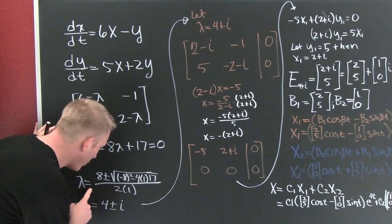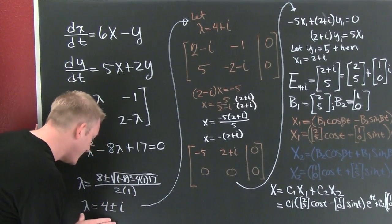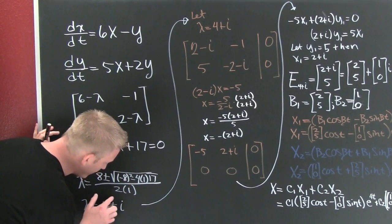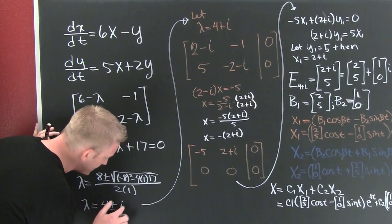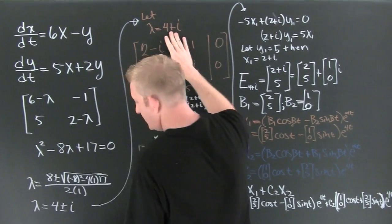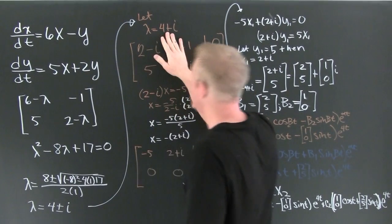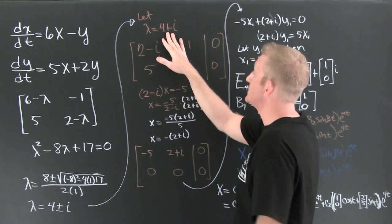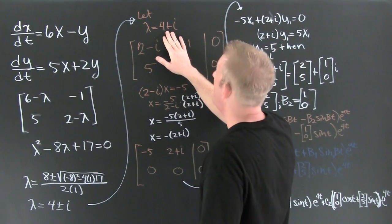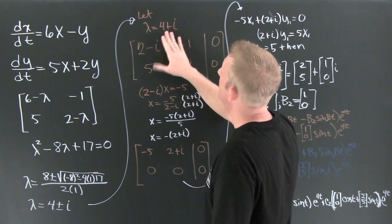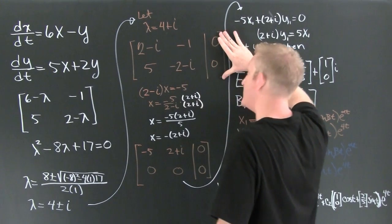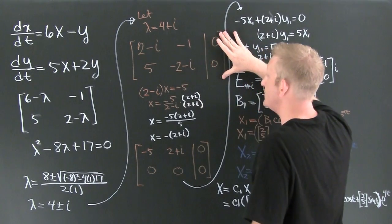Now that I'm going quadratic on it, I find that my lambda values are going to be 4 plus or minus i. You knew they were going to be complex conjugates anyway. So I take the positive one, put it into my characteristic matrix, and augment it with zero.